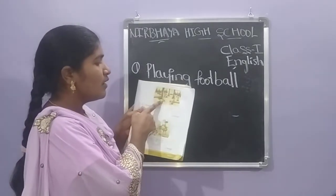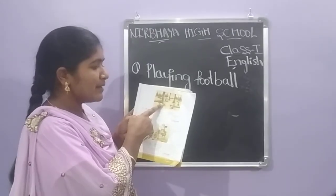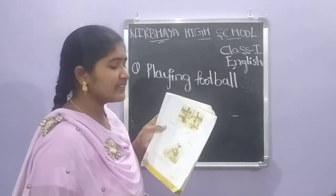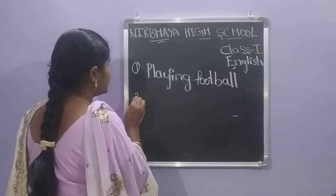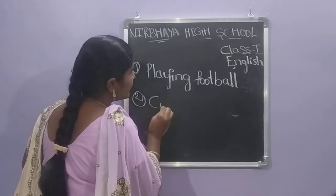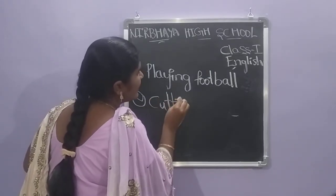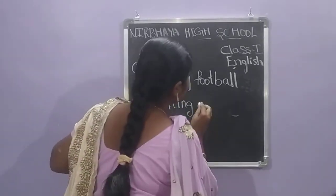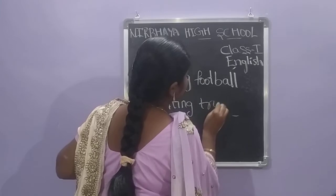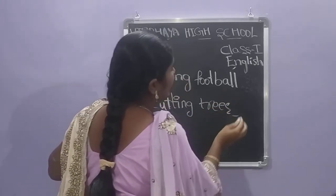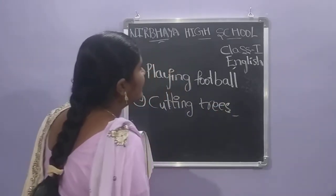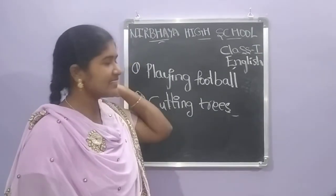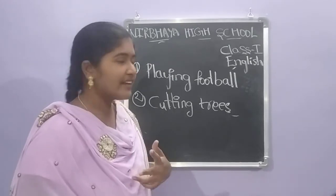Next one — observe the picture. What are the people doing? The people are cutting the trees. We have to write 'cutting' — C-U-T-T-I-N-G — and 'trees' — T-R-E-E-S. They are cutting trees.